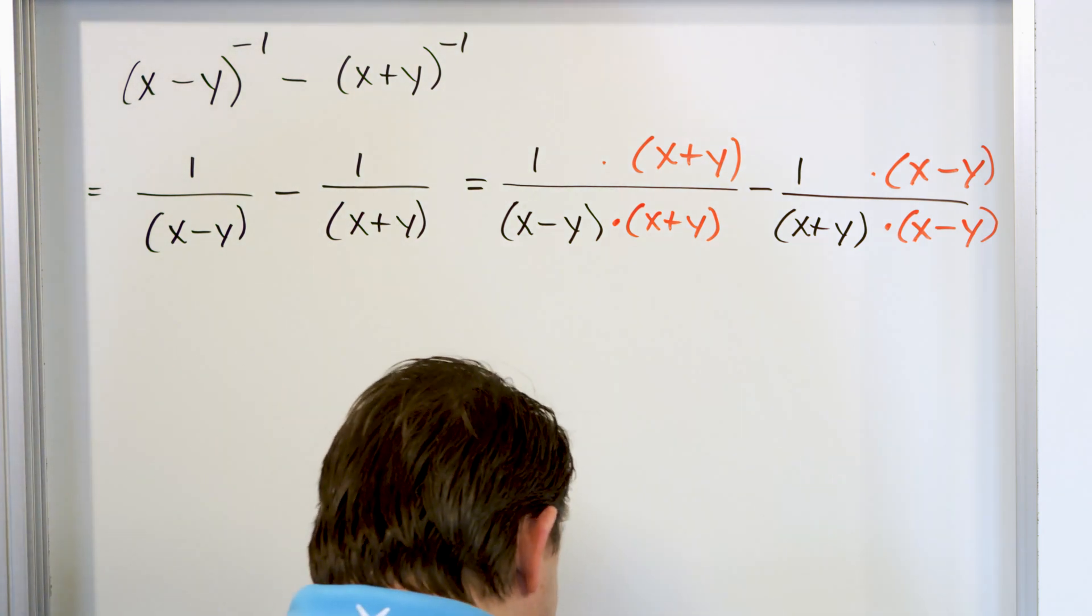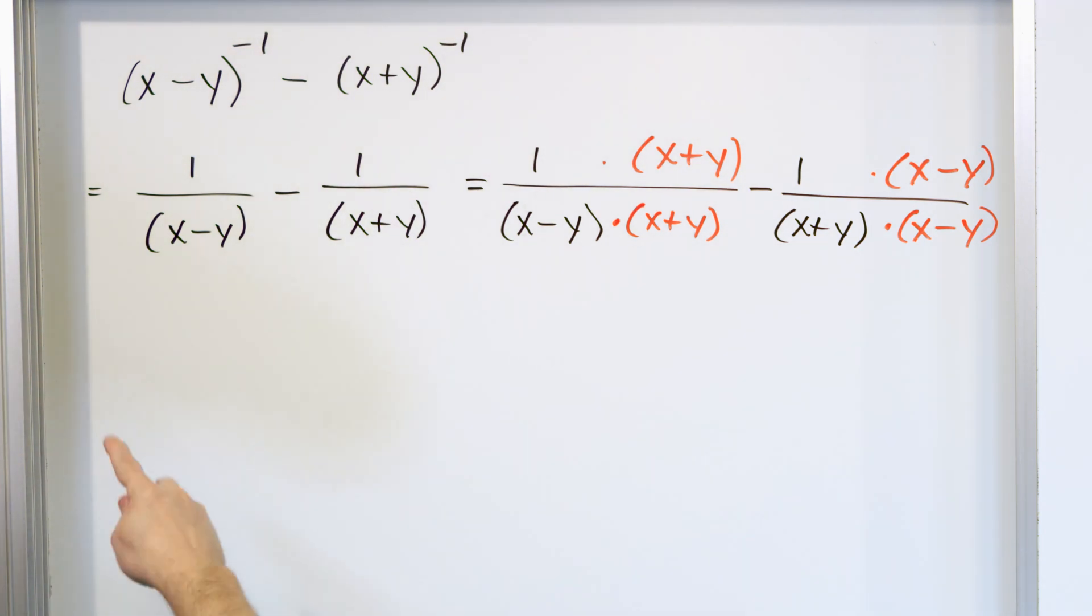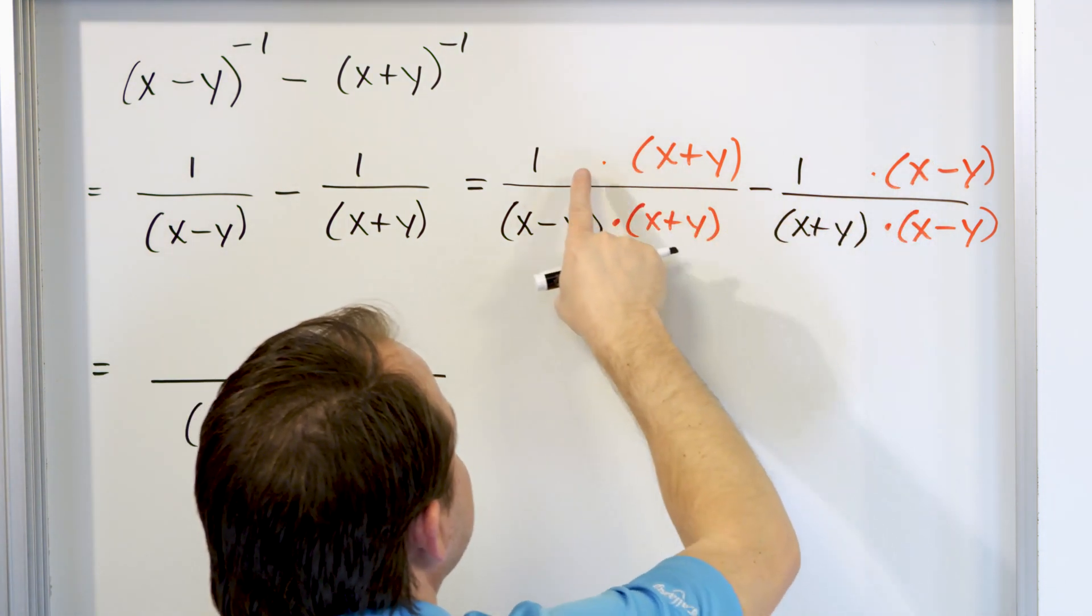So then what we have is on the answer what we're going to have is this is the new common denominator (x minus y)(x plus y). Now the numerators have to be subtracted. So this is just times one. So we just have (x plus y).